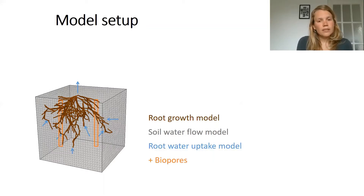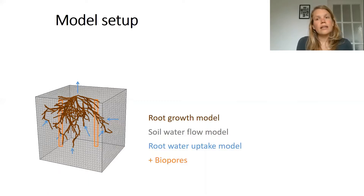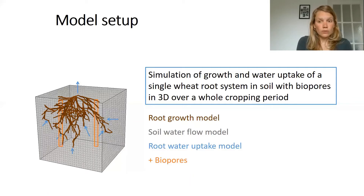For our study we additionally had to implement the impact of biopores into RSWIMS. For that we used a recently developed model that takes into account the impact of biopores on the root growth rate as well as on the root growth direction, and additionally we implemented the impact of biopores on root water uptake into RSWIMS. Basically what we did was we simulated the growth and water uptake of a single root system in soil with biopores in three dimensions over a whole growing period from April to end of July.